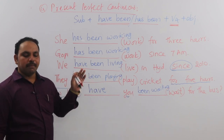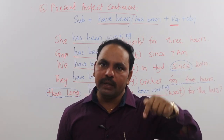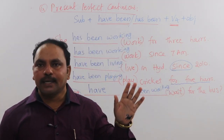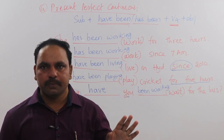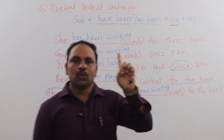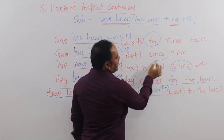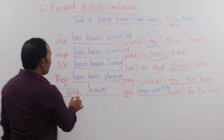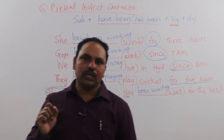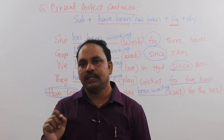This is how we use present perfect continuous tense — for an action that started in the past and is still continuing. There are three clue words to identify present perfect continuous tense: 'for', 'since', and 'how long'. When these words appear, we use present perfect continuous tense.